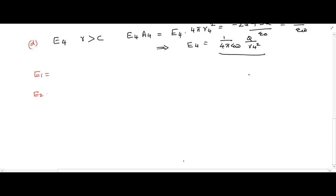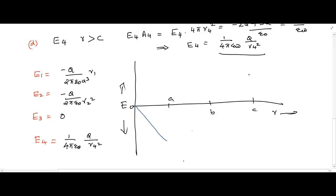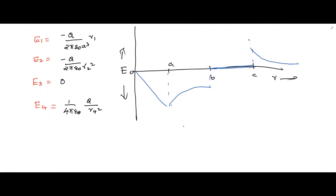Now that we have found the electric field at various locations, the results for each region can be written as follows. Let's draw an electric field versus distance plot. E1 inside the sphere is proportional to minus r; E2 in the cavity between the sphere and the shell is proportional to minus 1 over r squared; E3 inside the conducting part of the shell is zero; and E4 outside the shell is proportional to 1 over r squared.